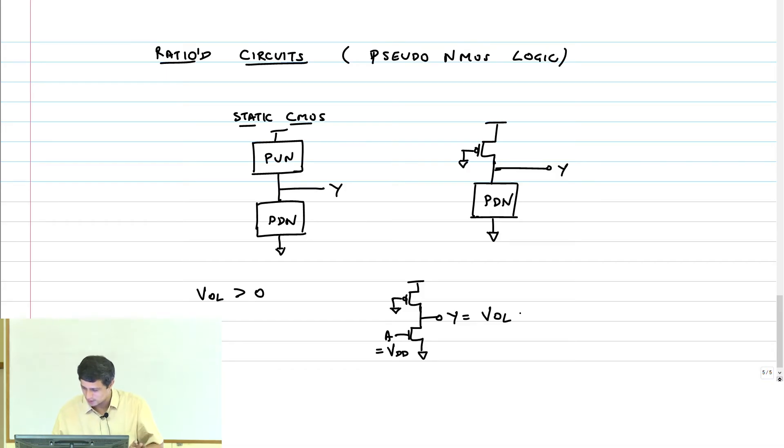Let us not jump there, let us write it down. NMOS, PMOS, VGS, VDS. What is VGS for the NMOS transistor? VDD. VDS? VOL. Now, VDS compared to VDS minus VT, where is it? Therefore, region is linear. Therefore, region is linear because VOL is much smaller than VDD minus VT.